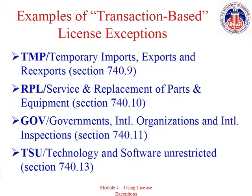The remaining license exceptions authorize exports and certain re-exports based on the overall circumstances of the transaction. These are often referred to as transaction-based license exceptions. The ECCN entry for your item will not indicate whether these license exceptions can be used, and in fact, these transaction-based license exceptions will largely authorize transactions regardless of the ECCN unless otherwise indicated. For example, license exception TMP may be available in certain circumstances involving temporary exports and re-exports, as well as exports and re-exports of items temporarily in the United States.